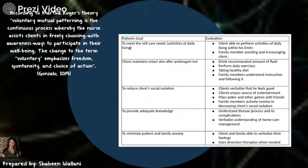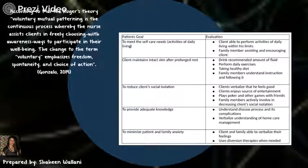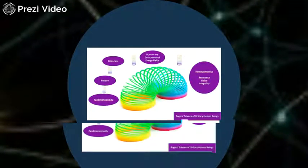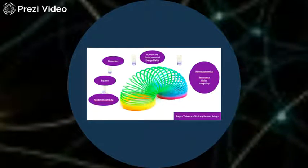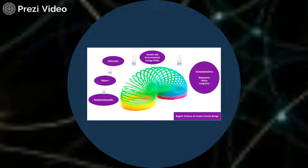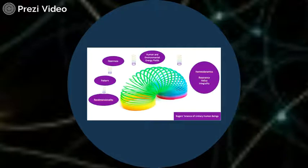The last goal is to minimize patient and family anxiety. The evaluation would be the client and family able to verbalize their feelings and use diversion therapies when needed. In conclusion, Martha Rogers' theory, the science of unitary human beings, has had a strong impact on health and nursing. By emphasizing both an individual's inherent worth as well as how the individual relates to the environment, Rogers helped improve patient-centered nursing practice. Under Rogers' model, the concept of health expands beyond the body to the mind, and even to the relationships a patient has. This allows nurses to assess patients based on their psychosocial functioning in the world.